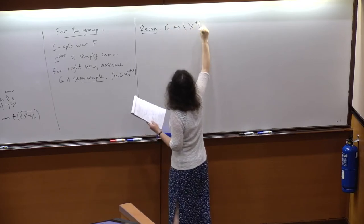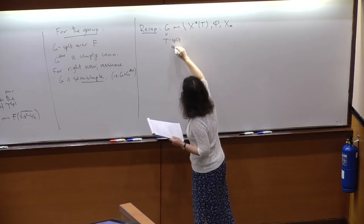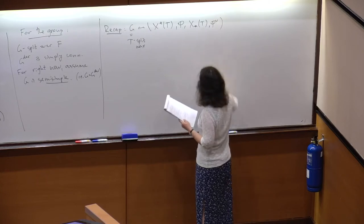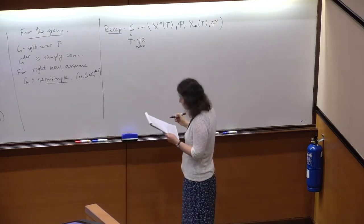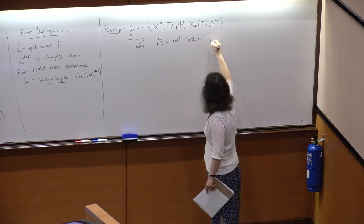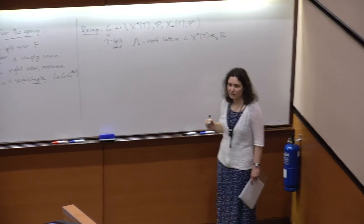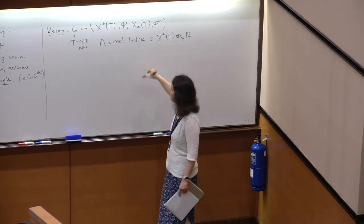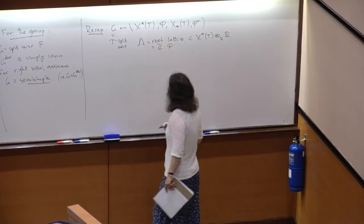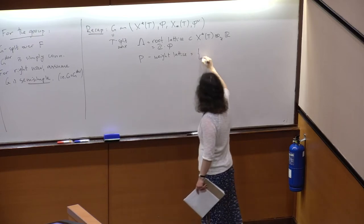A quick reminder of what semi-simple means: since G is split it corresponds to its root datum, a quadruple. We have the split maximal torus T_split, the character lattice, the roots, co-characters, and co-roots. We can form the root lattice — the lattice spanned by the roots — and dually the weight lattice, the set of mu such that the pairing with co-roots is an integer.